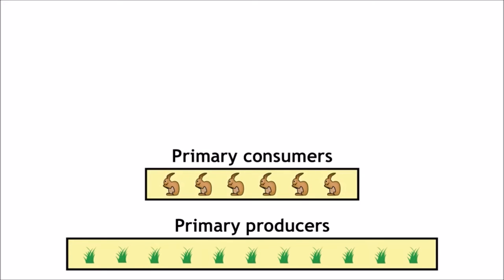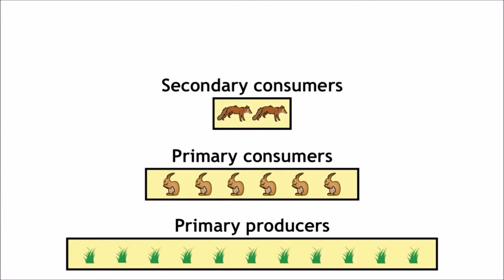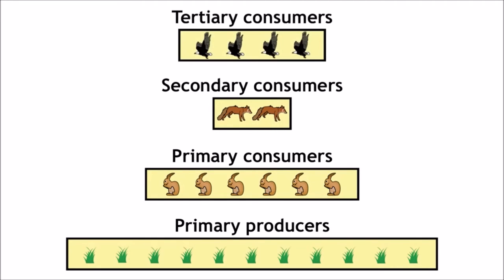On top of that go the primary consumers, the second trophic level, and so on up through the secondary consumers, tertiary consumers until you reach the highest trophic level in that ecosystem.